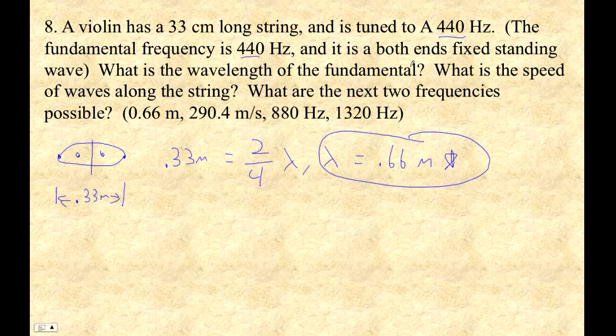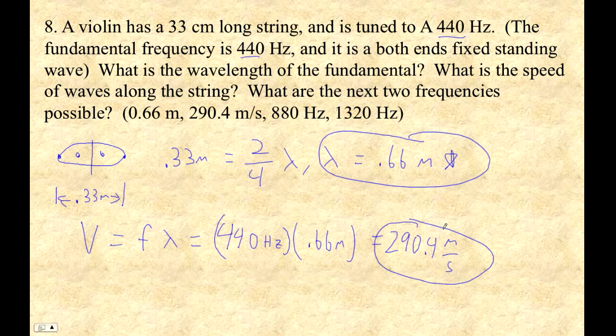And then if it's 440 Hertz, we can find the wave speed. So the velocity is frequency times wavelength. So it's 440 Hertz times 0.66 meters per wave. 440 times 0.66, 290.4 meters per second. So that's how fast the little pulses would move down that string.